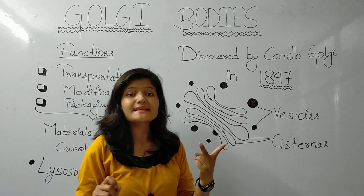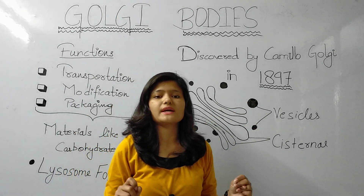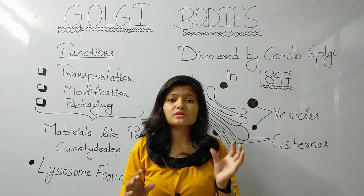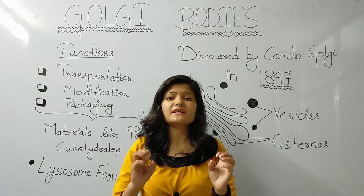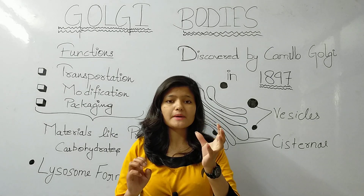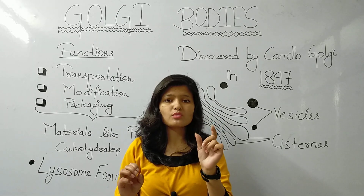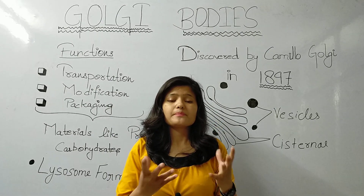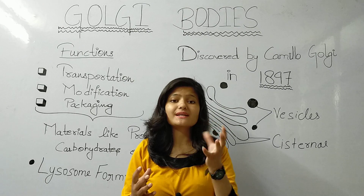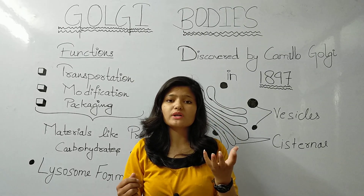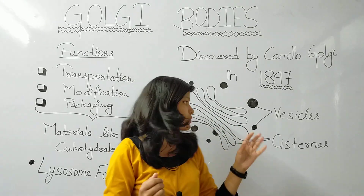The second component is vesicles. Vesicles are round, spherical or oval in shape. They contain glycoproteins, glycolipids, proteins, and lipids.